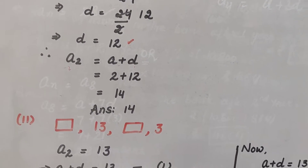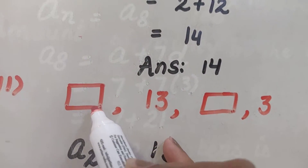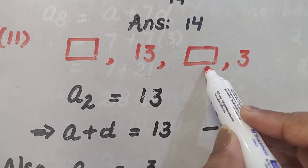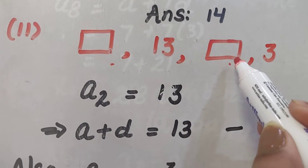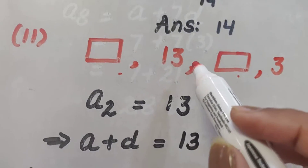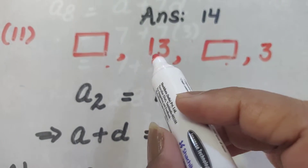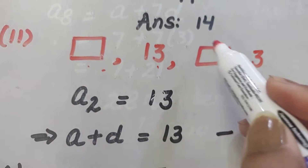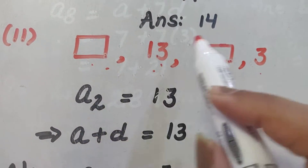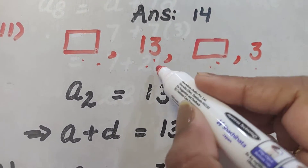Now let us see the second part of the question. Here the first term is missing, and the third term is also missing. So neither do we have 'a', nor can we find 'd' directly, because no two consecutive terms are known. To find 'd' we need either a₂ − a₁, or a₃ − a₂, or a₄ − a₃, but no two consecutive terms are known.